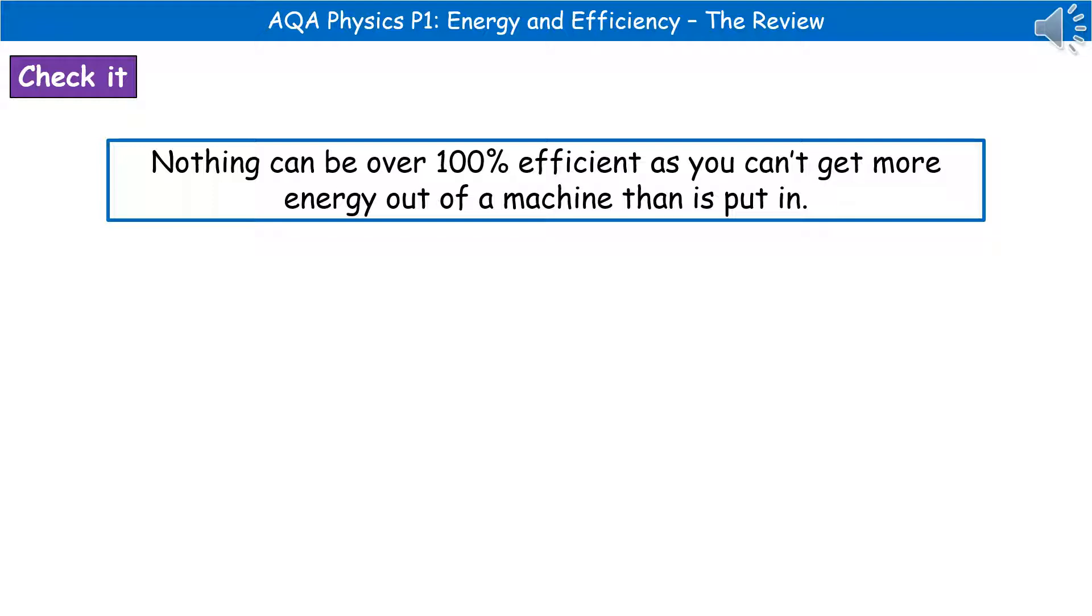There is a very handy little check you can do here, because when you're calculating the percentage efficiency of an object, it cannot be over 100% efficient. Because if it was over 100% efficient, then you'd be getting more energy out of the machine than you've put into it, and that's impossible. So if you've done your calculation and you end up with 136%, you've got the numbers the wrong way around. So flip them times by 100, and you'll get the right answer.